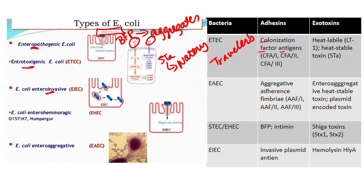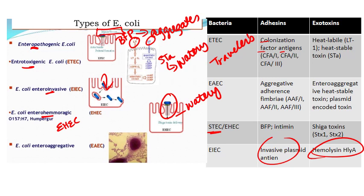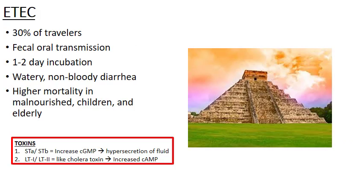EIEC — enteroinvasive E. coli — has an invasive plasmid antigen, which enables it to actually enter our cells. It also has hemolysin A. Enterohemorrhagic E. coli (EHEC) literally has the shiga toxin, so you'll still have high-volume watery diarrhea but also bloody diarrhea on top of that. Enteroaggregative E. coli has aggregative adherence fimbriae giving them that stacked brick appearance, plus a heat-stable toxin and a plasmid-encoded toxin involved in their pathogenesis.